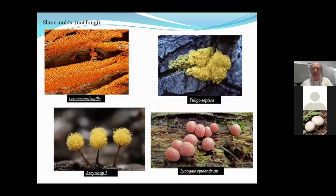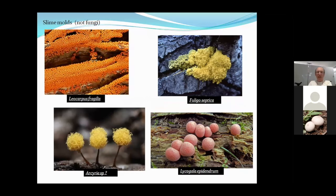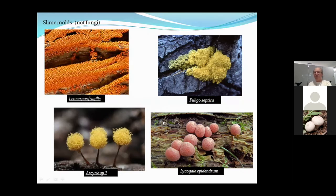Technically no longer classified as fungi, slime molds are really interesting organisms that grow in the woods. They creep along the ground as a plasmodium — like a giant amoeba eating organic material. At some point they stop and form tiny fruiting structures that look like little lollipops or tiny eggs on logs and on the ground. They're really beautiful, though they're not actually related to fungi at all.